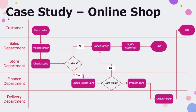If stock is available, the finance will process the credit card. If the credit card is invalid, then the sales will cancel the order and notify the customer. If the credit card is valid, the finance will process the card and the delivery department will do the delivery.